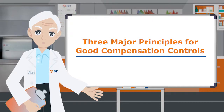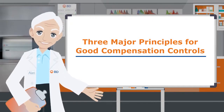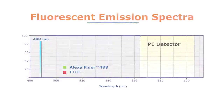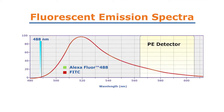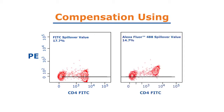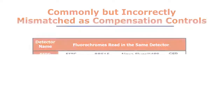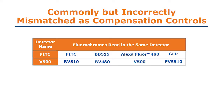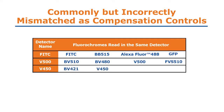First, the fluorescent spectrum of the compensation control reagent must be identical to the reagent used in the experiment. Even similar fluorochromes such as FITC and Alexa 488, seen here, have slightly different emission spectra, which leads to different spillover values. As shown in this example, this means that FITC spillover values are appropriate for the FITC dye, while using the Alexa Fluor 488 spillover values will lead to undercompensation for that same reagent. Here are some other dyes that are read in the same detector and are commonly but incorrectly mismatched as compensation controls.